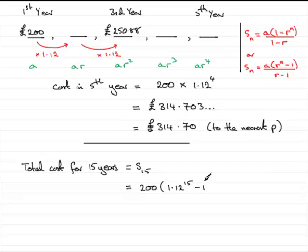Then we take away 1 and we divide all of this by r minus 1. So 1.12 minus 1. Do this on your calculator and what you should find that you get is 7,455.942 and so on.